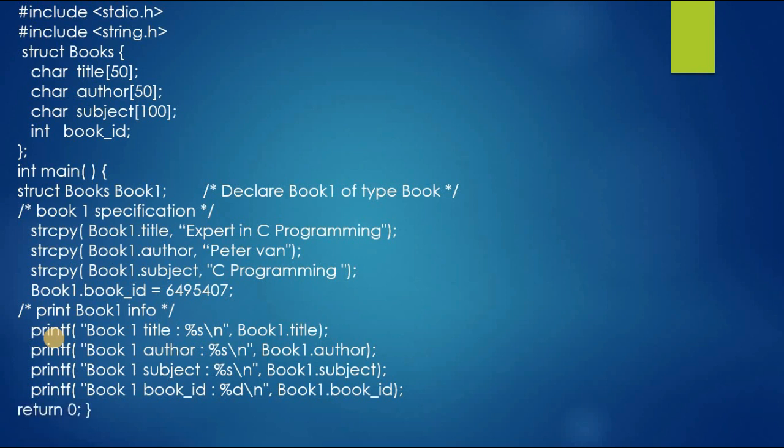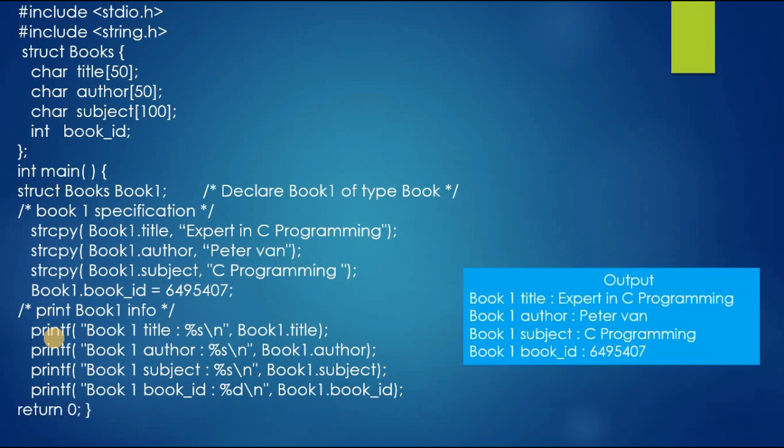When we execute this program we will get output like this. The book title is Expert in C Programming. Book author is Peter van. The subject is C Programming. The book id is 6495407. It will display like this output.